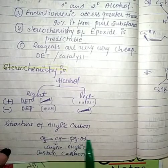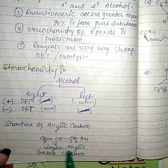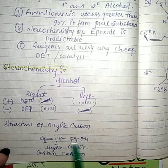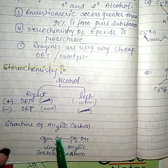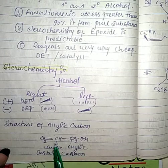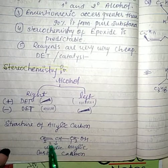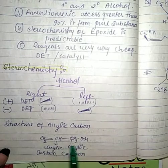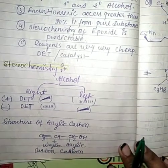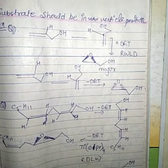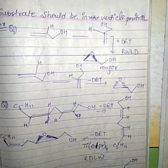Next we see the structure of allylic carbon. The allylic carbon is the carbon adjacent to the vinylic carbon. The vinylic carbon is the double-bonded carbon, and the next carbon to it is called the allylic carbon. Some examples of Sharpless epoxidation substrates are given.